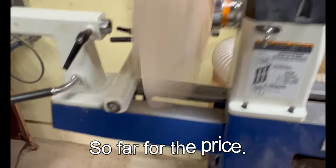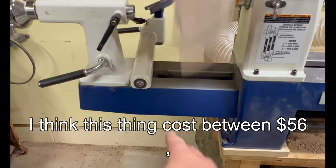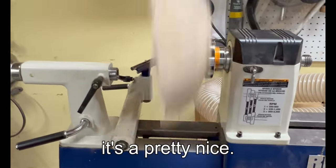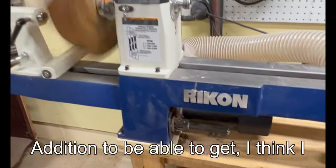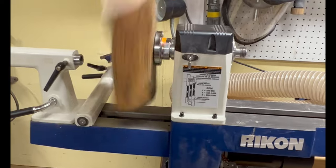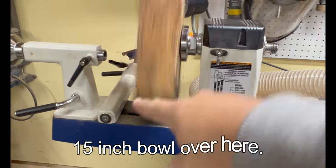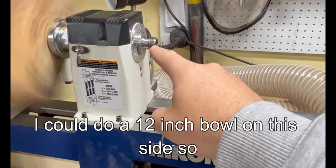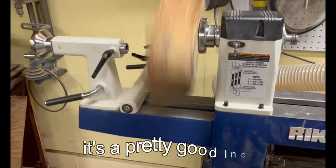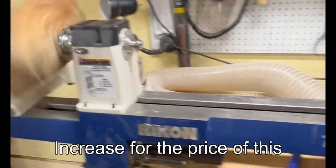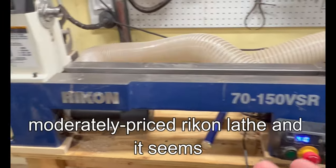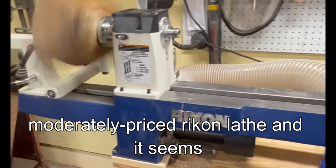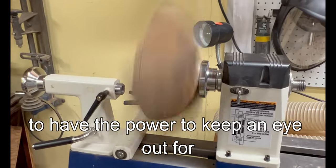So far for the price, I think this thing costs between $50 and $60. It's a pretty nice addition to be able to get. I think I measured, I should be able to do at least a 15 inch bowl over here. I could do a 12 inch bowl on this side. So it's a pretty good increase for the price of this, a moderately priced Rikon lathe, and it seems to have the power to do it.